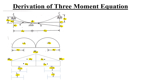Let theta be the angle between the horizontal line and the tangent at B. Consider right angle triangle A1'-B-A2': tan(theta) equals A1'A2' divided by L1. Similarly, consider right angle triangle B-C1-C2: tan(theta) equals C1C2 divided by L2. Since both thetas are the same, A1'A2' / L1 = tan(theta) = C1C2 / L2.